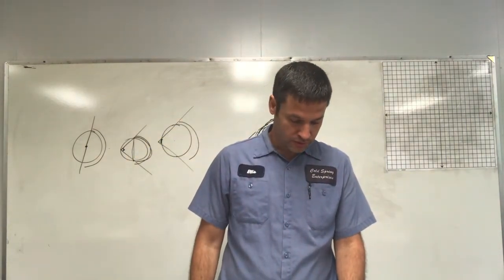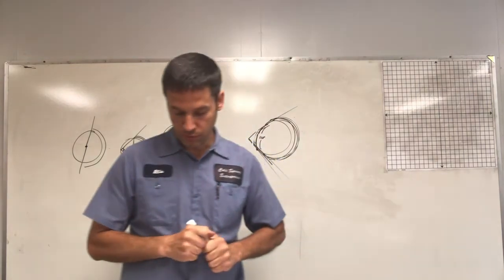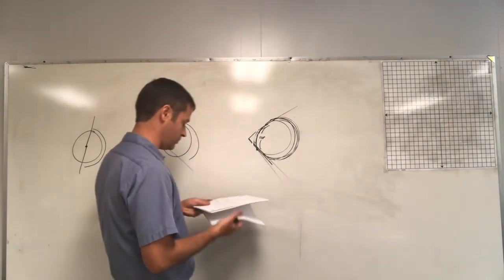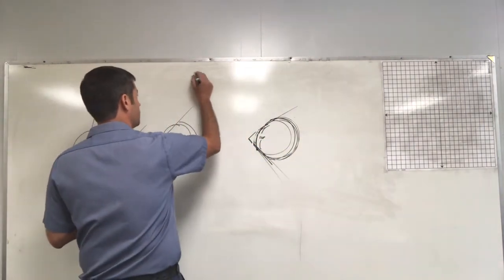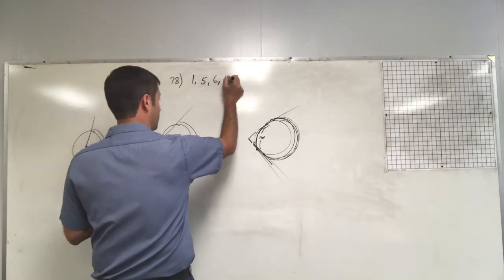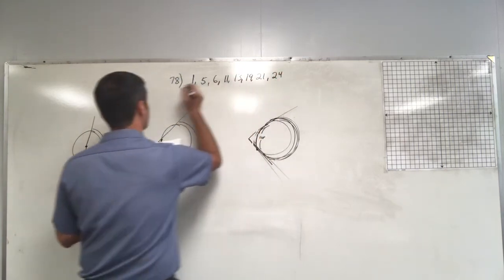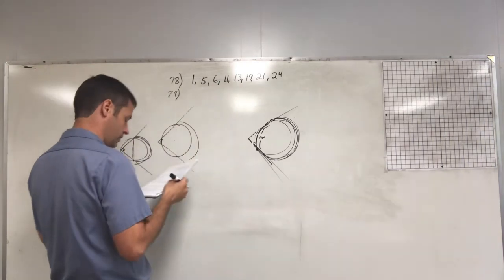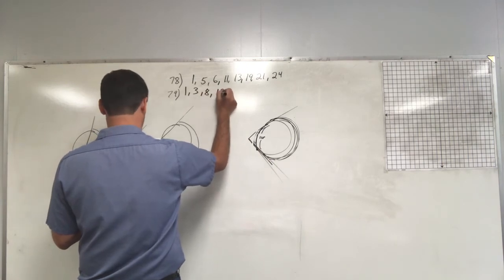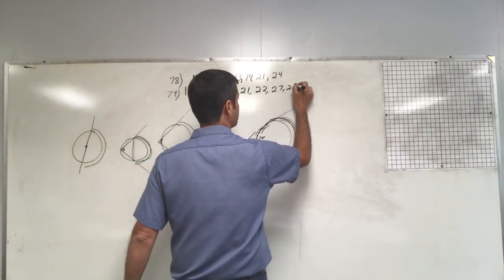That is the whole lesson — we'll leave it at that. Your homework is as follows. Lesson 78 homework: problems 1, 5, 6, 11, 13, 19, 21, and 24. Lesson 79 homework: problems 1, 3, 8, 12, 17, 21, 22, 27, and 29. This is due on Friday.